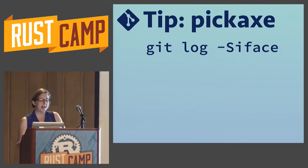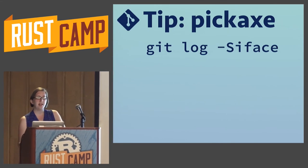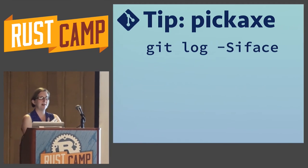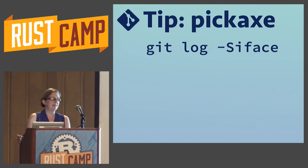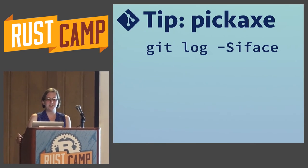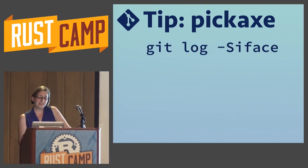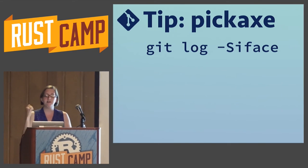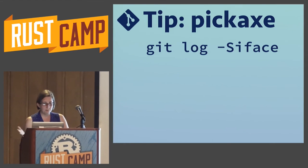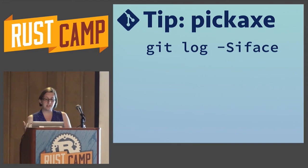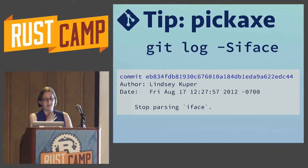So because we don't know where in the codebase this was, we can't use the git log and git blame tricks from the second example. At this point, I'd pull out the pickaxe search — git log -S or -G. -S finds the commits where the thing you're searching for was added or removed on a particular line. -G is a more recent addition to git where you find lines where the thing you're searching for was changed, not just added or removed. If we run this on the Rust repository, we find a commit from Lindsey Cooper that says 'stop parsing iface.' So this is where it disappeared.